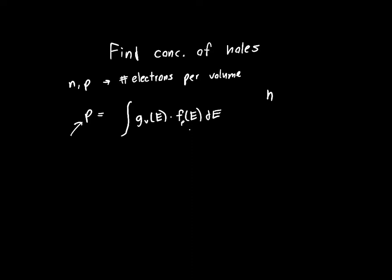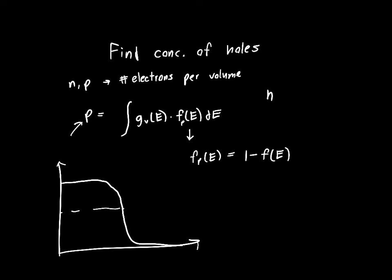fp(E) is one minus the Fermi function we derived previously, and that's because the Fermi function f(E) is the probability of finding an electron. It goes to one half at the Fermi energy.